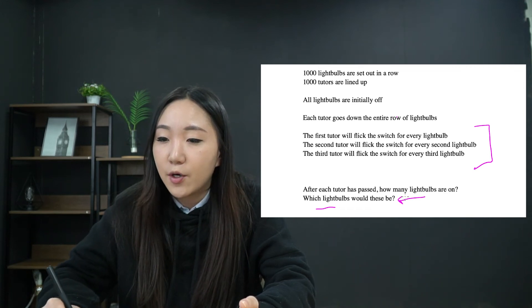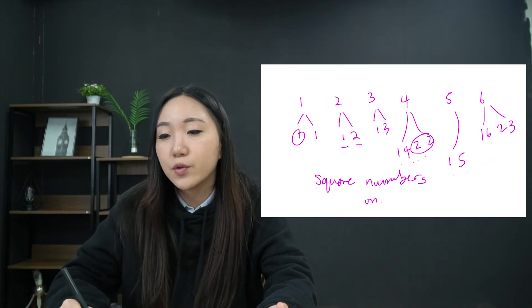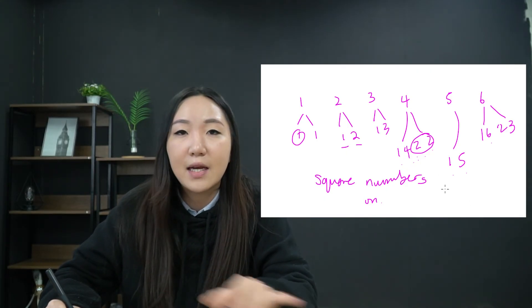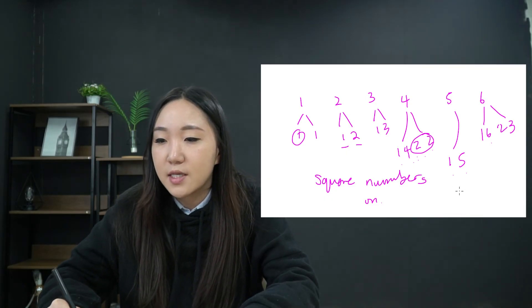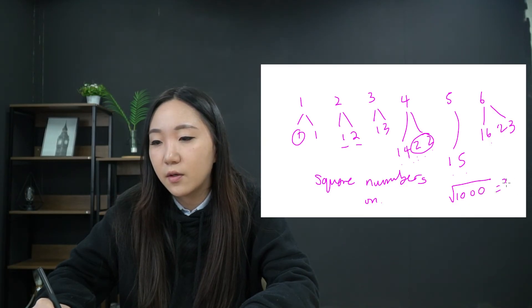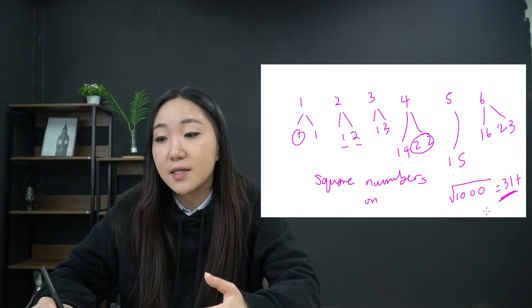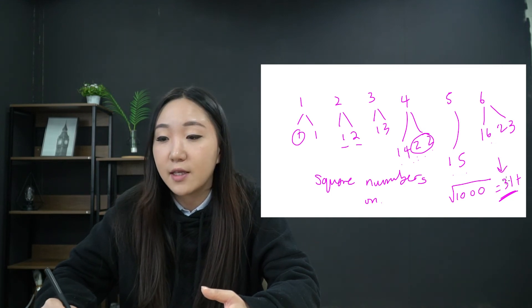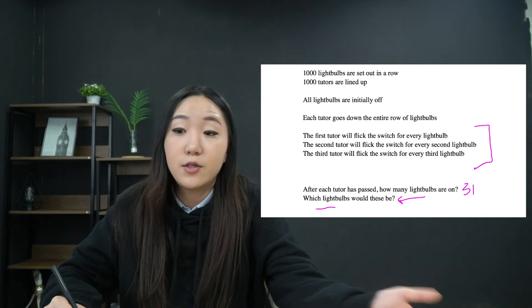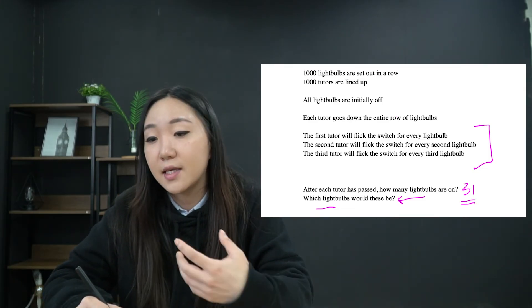So that answers which lightbulbs would these be. Now we want to know how many lightbulbs would therefore be on of that 1000. So how would you go about solving that? We know it's all square numbers. So we want to try and find what would be the largest square number under 1000. How many square numbers are under 1000? So I think that's pretty simple. Let's just root 1000. And what would that give you? I think roughly 31 plus. So because of that, we know that if it's going to be point something, we want to round down because we can't have anything be greater than 1000. So the answer would be that there would be 31 lightbulbs at the end of every tutor passing by.